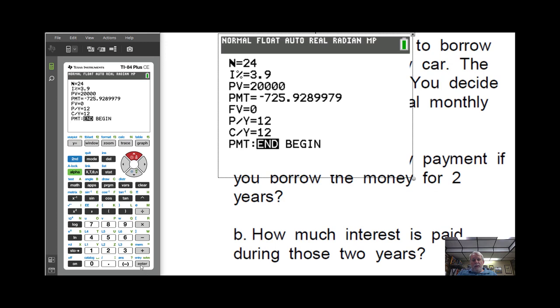and you notice above the enter key is the word solve in green. So press alpha enter to solve for that missing value. So alpha, enter.